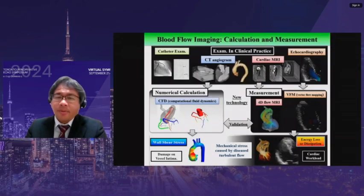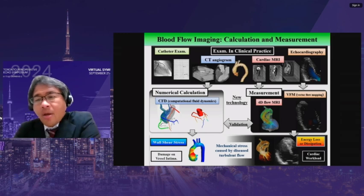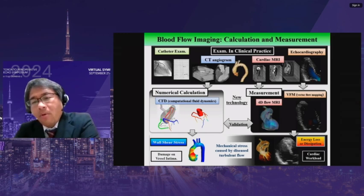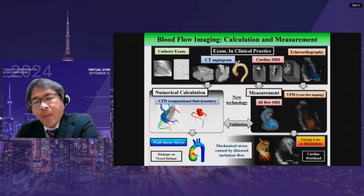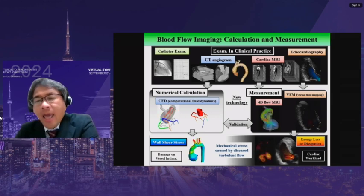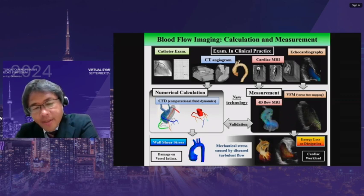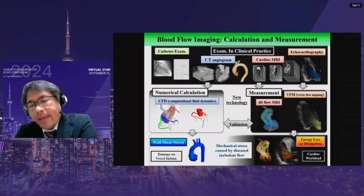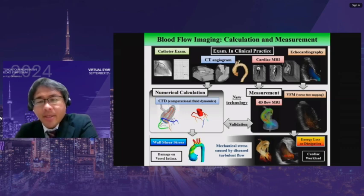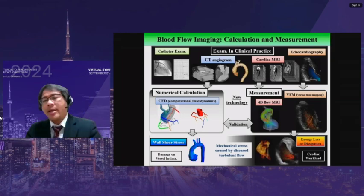Here we show the final slide. These are the blood flow imaging tools that I have developed. There are two kinds of blood flow imaging: numerical calculation-based, such as CFD simulation, and measurement-based, such as 4D flow MRI or echocardiography vector flow mapping. Mechanical stress caused by disease turbulent flow can be estimated using parameters such as wall shear stress or flow energy loss by blood flow imaging. Thank you for your attention.